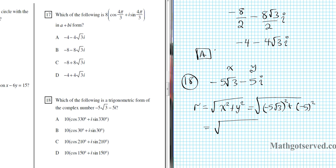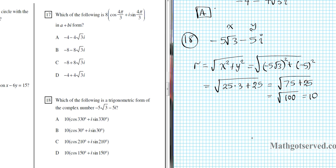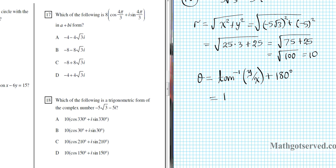That simplifies: negative 5 squared is 25, times 3 is 75, plus 25. So that equals the square root of 75 plus 25, which equals the square root of 100, which is 10. So r equals 10. Now we need to find angle theta. The formula for theta, from the formula sheet, is the inverse tan of y over x, and you always add pi if x is negative. Since our options are in degrees, pi equals 180 degrees. So we plug in y equals negative 5 over x equals negative 5 root 3, plus 180 degrees.